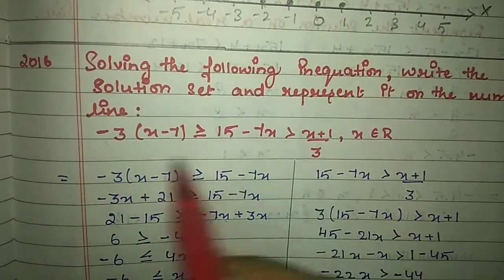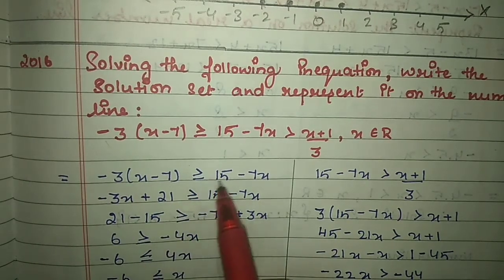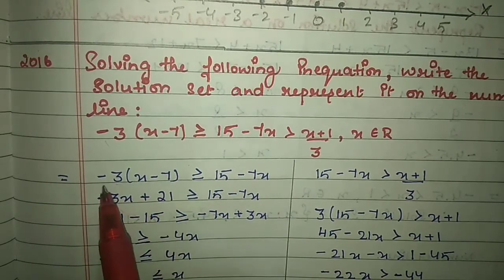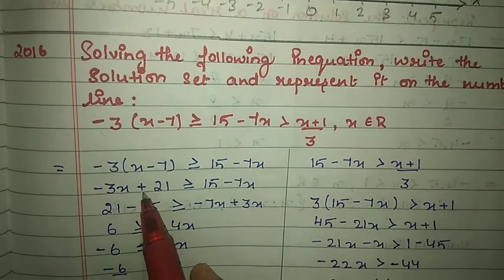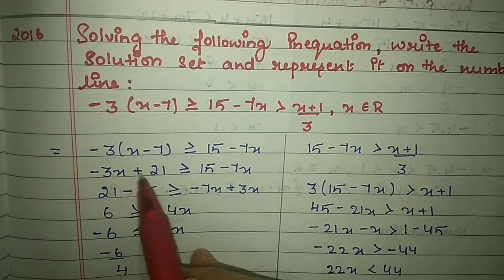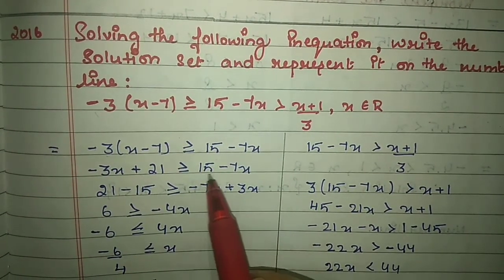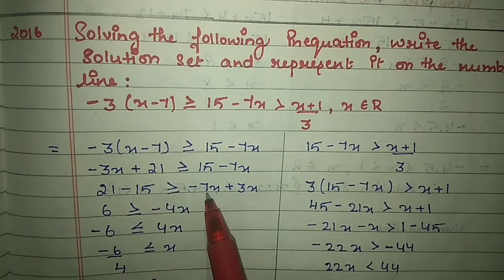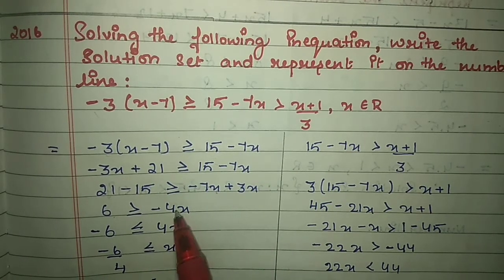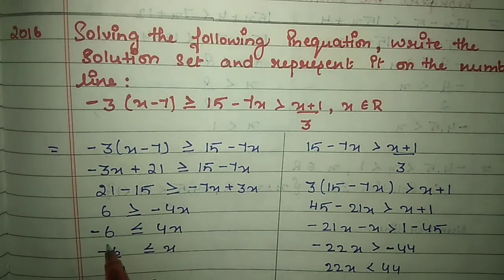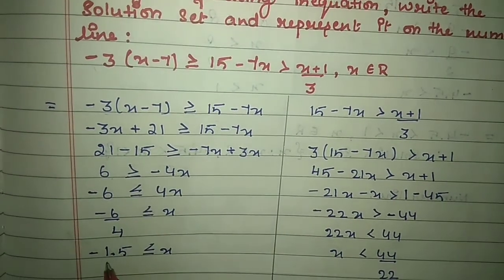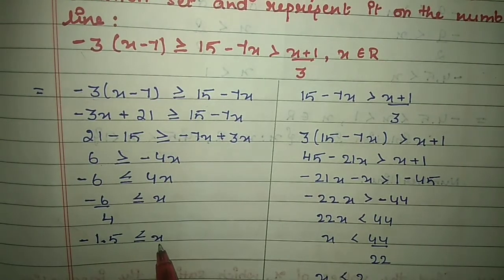Take the first half: minus 3(x minus 7) ≥ 15 minus 7x. Remove the bracket: minus 3x + 21 (minus times minus gives plus). Shift minus 3x to the other side as plus 3x, and shift 15 as minus 15. You get 21 minus 15 = 6 on the left and minus 7 + 3 = minus 4x on the right. Shifting minus 4x reverses the inequality symbol: greater than becomes less than equal to, giving minus 1.5 ≤ x.